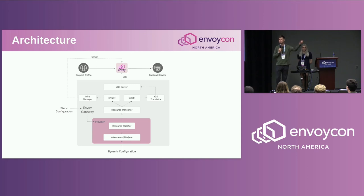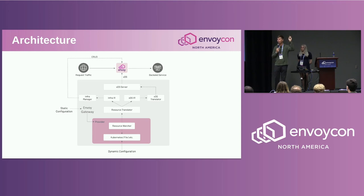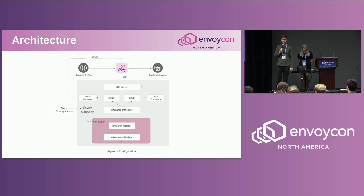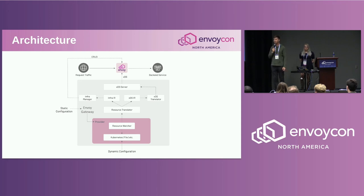The provider is also responsible for watching any dependent resources for managing the Envoy proxy infrastructure, as well as for storing and persisting that data. With a Kubernetes provider, that's stored in etcd. It also handles service discovery — Kubernetes provides that via Kube DNS or CoreDNS, depending on how your cluster is configured, but typically CoreDNS.